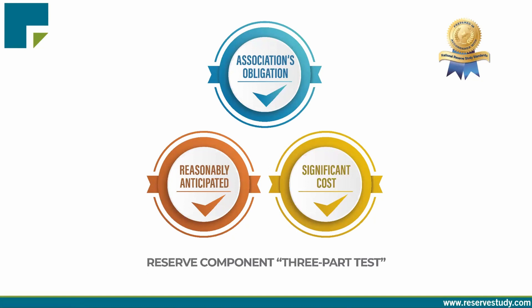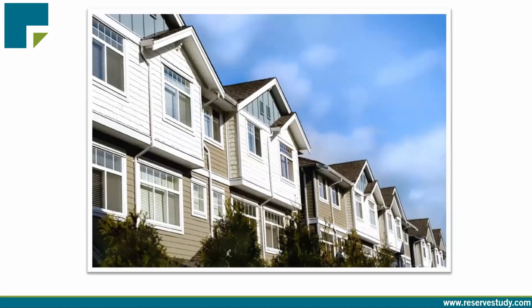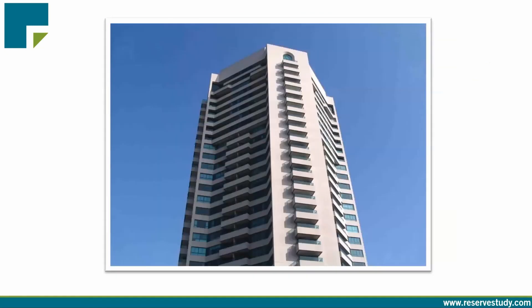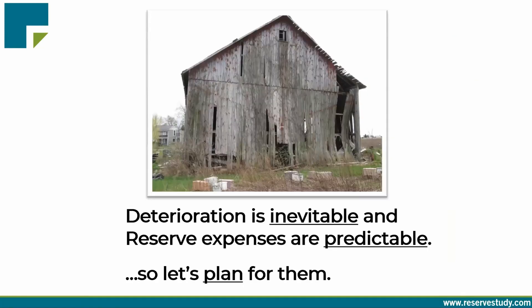If a project doesn't pass all three elements of this three-part test, it shouldn't be funded through reserves. There's no industry master checklist, and no list proprietary to any reserve company. If you're trying to follow a checklist, you're always going to miss something — that's why we use the three-part test. It effectively helps you find the right projects to fund through reserves at your association, whether it's a new townhome, a high-rise, an older association, or an exotic resort association.